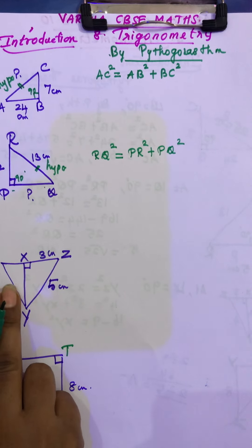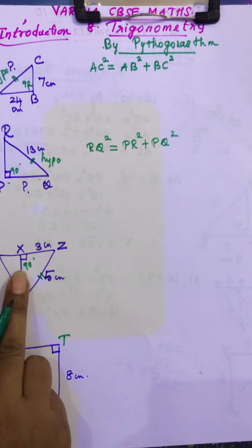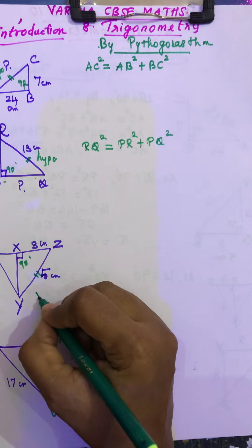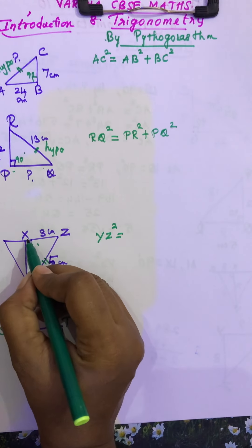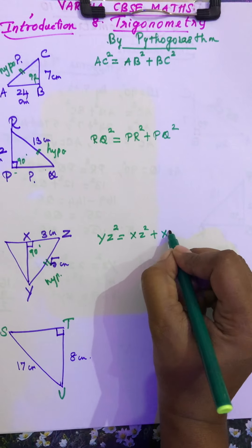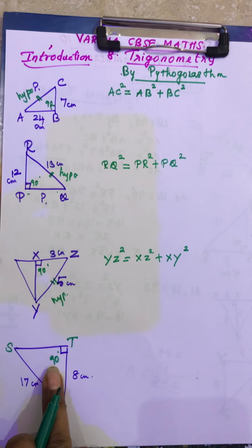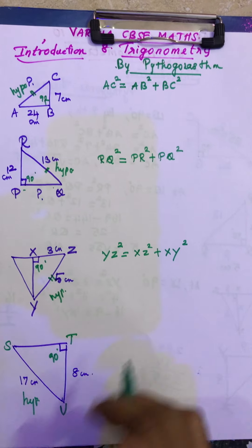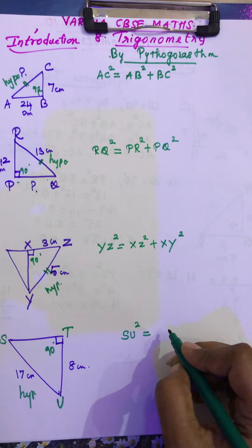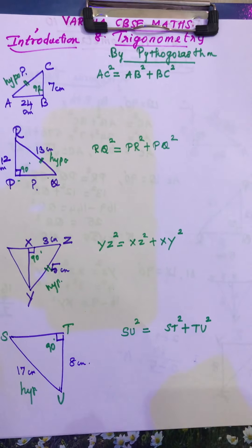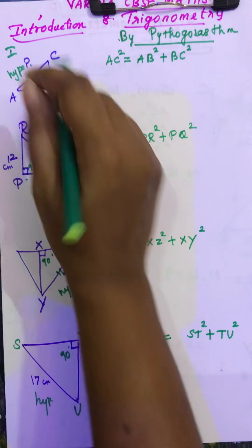Go to the next triangle. The 90 degree is at X. What is your hypotenuse? This is 90 degrees, and the opposite side is YZ — so YZ is your hypotenuse. We write: YZ² = XZ² + XY². Now the fourth triangle: where is your 90 degree? At T. And what is your hypotenuse? That is SU. So: SU² = ST² + TU². I have now written the theorem for all four triangles.